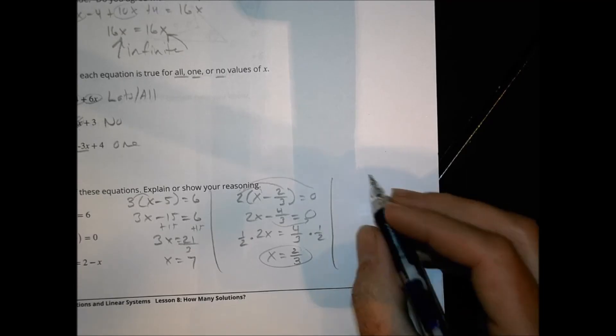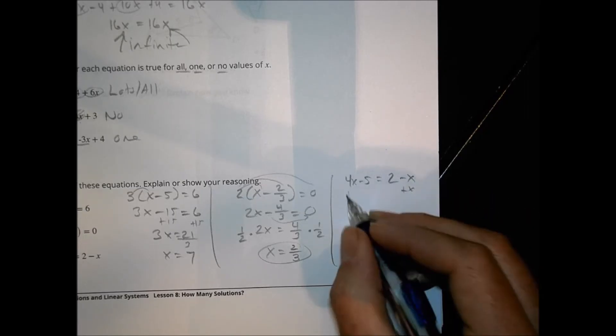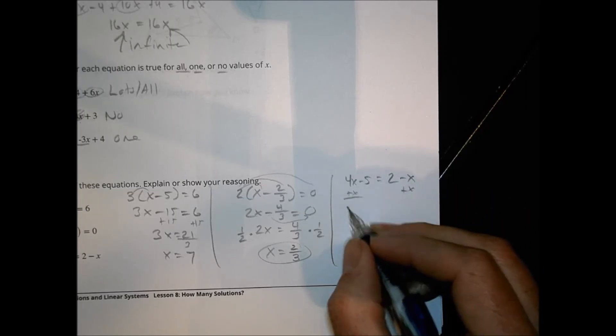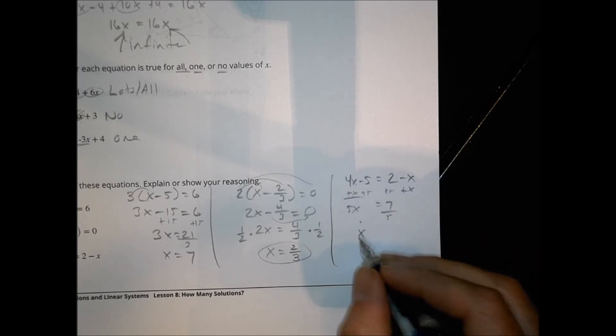Finally for part C: 4x minus 5 equals 2 minus x. Add x to both sides: 5x minus 5 equals 2. Add 5: 5x equals 7. Divide by 5: x equals 7/5. That's our solution. So those are homework numbers 1 through 4. Now let's turn the page to numbers 5 and 6.